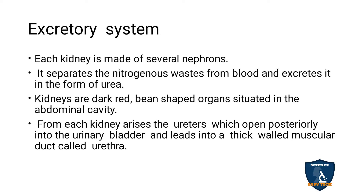The rabbit is a mammal, and its excretory system is made up of kidneys. Each kidney is made up of several nephrons. The kidney separates nitrogenous waste from the body, which is excreted as urea. The kidneys are dark red, bean-shaped, and situated in the abdominal cavity. Each kidney has a tube called the ureter, which opens into the urinary bladder.